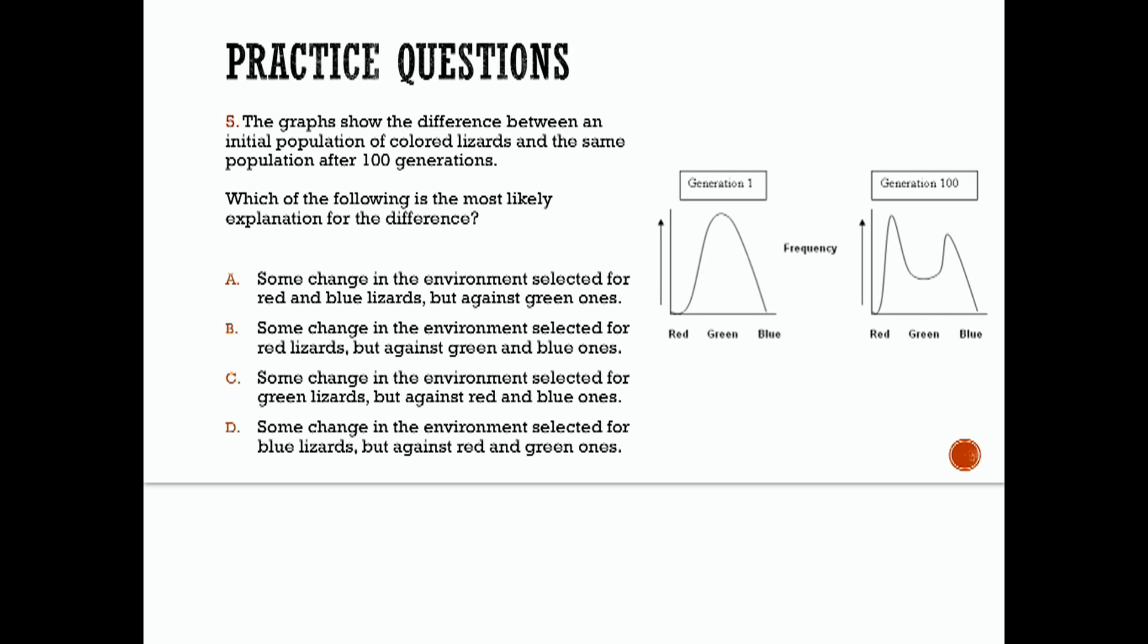Look at your answer choices and see what you come up with. This initial population showed a variation in color, with green being the average. While the final population showed a decrease in the frequency of green with a corresponding increase in the frequency of red and blue. There was some change in the environment that selected against the green, but favored the red and blue. Remember that's called disruptive selection. If we look at our answer choices, that matches up with A. Some change in the environment selected for red and blue lizards, but against the green ones.